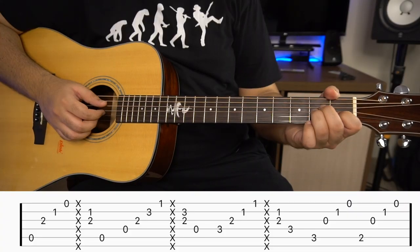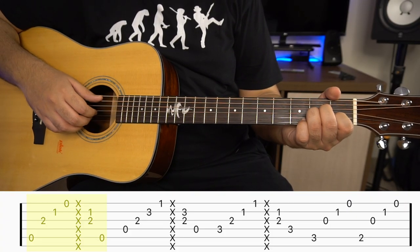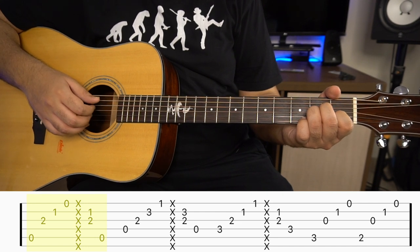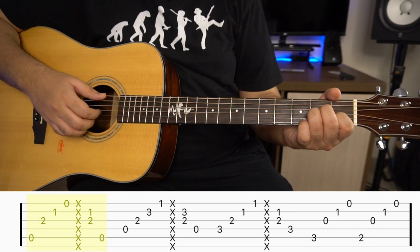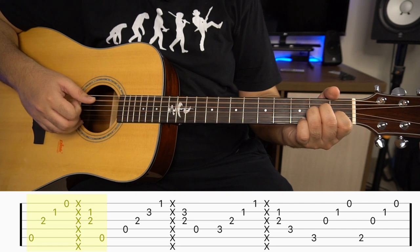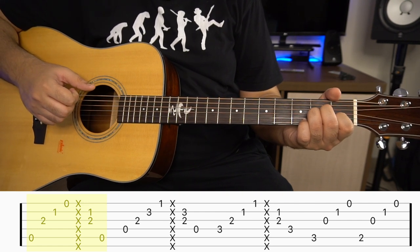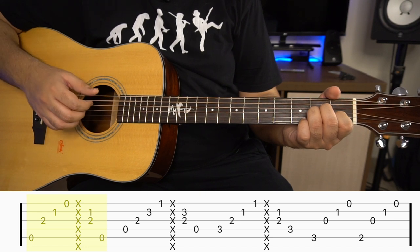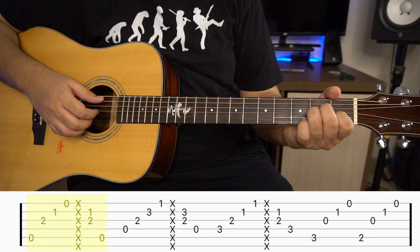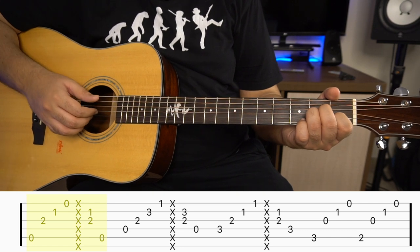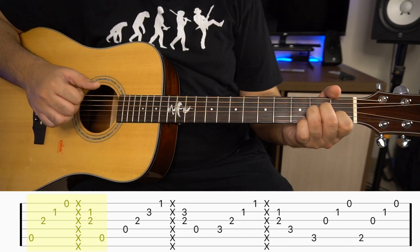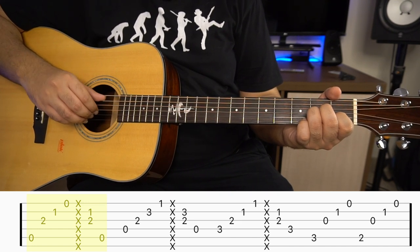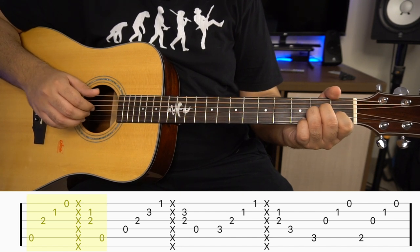So let's start the lesson. First we will play an A minor chord, and we will play 5th string, 3rd string, 2nd string, 1st string. Then you will play 2nd and 3rd string together, and last time you will play 5th string open. So this is the arrangement.